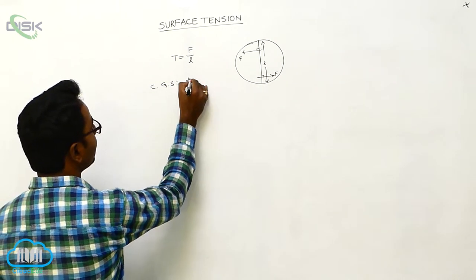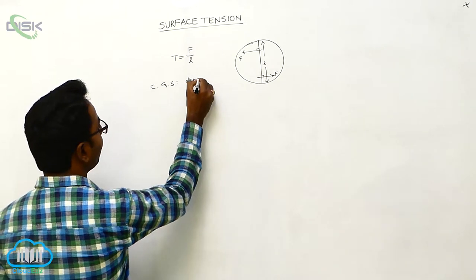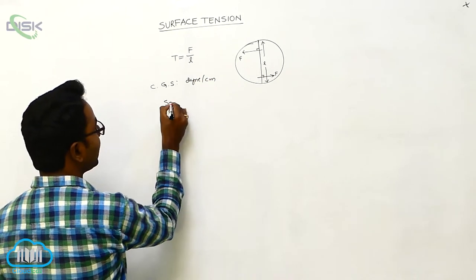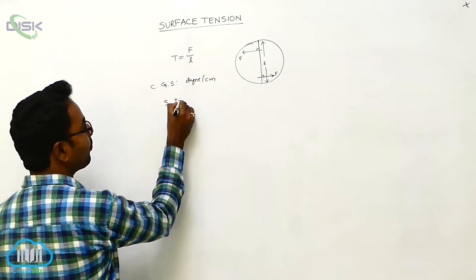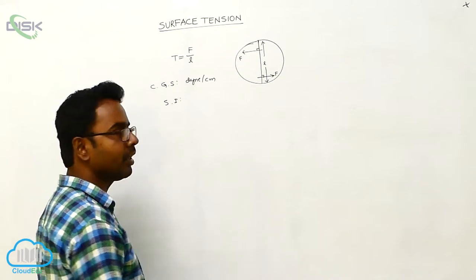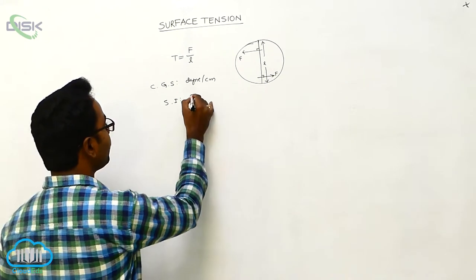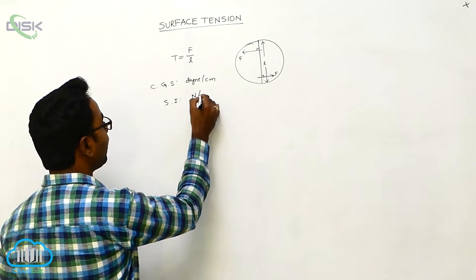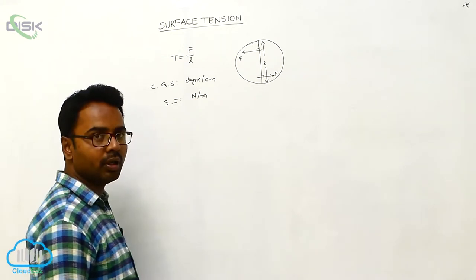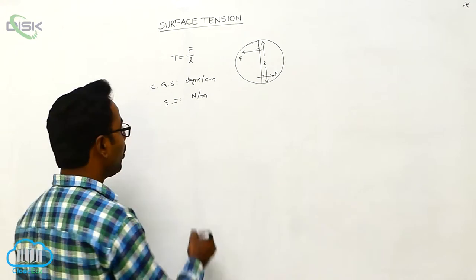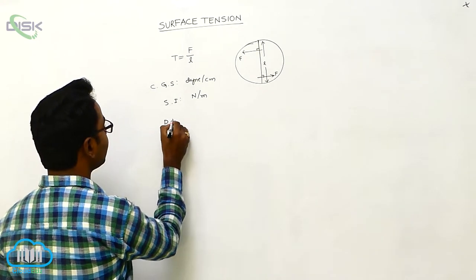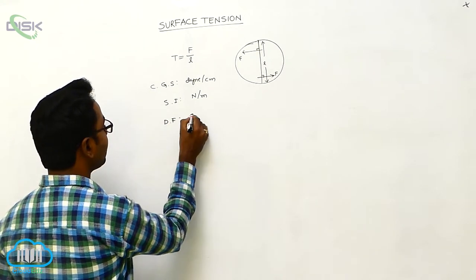The CGS unit of surface tension uses dyne for force and centimeter for length. The SI unit of surface tension is Newton per meter — Newton for force and meter for length.